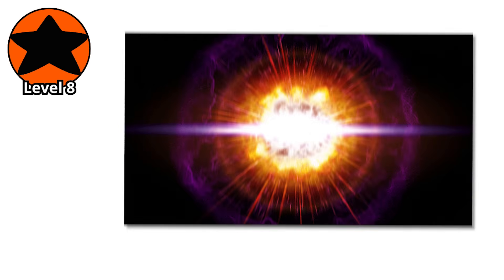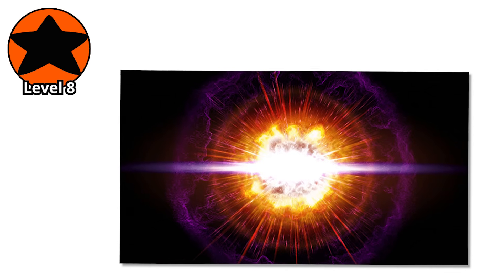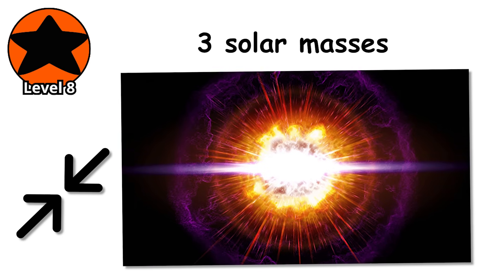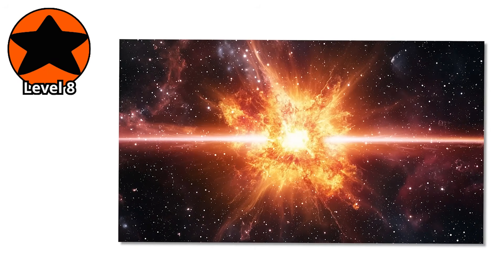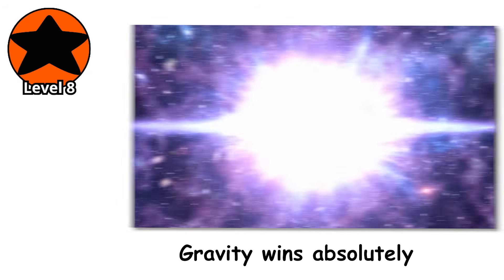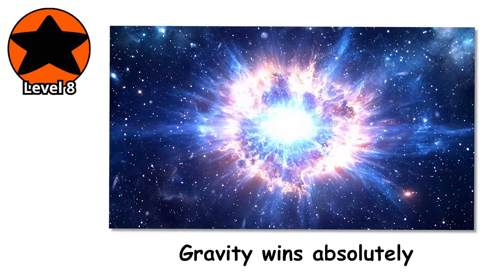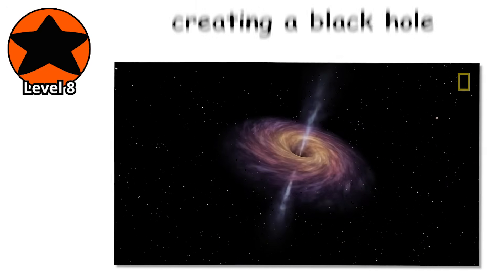Level 8. When the core of a dying massive star exceeds about three solar masses, nothing can stop the collapse. Not electron degeneracy pressure, not neutron degeneracy pressure. Gravity wins absolutely, crushing the core into a singularity, a point of infinite density, and creating a black hole.